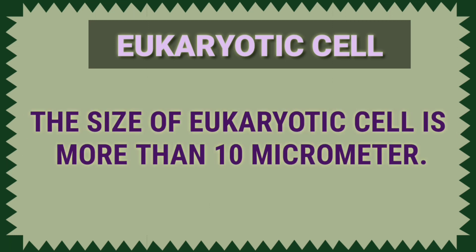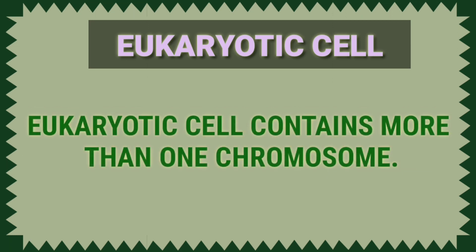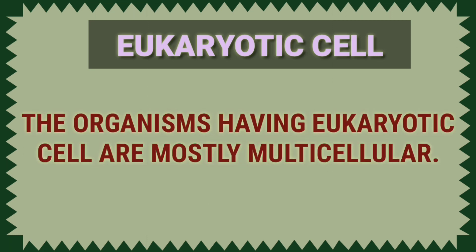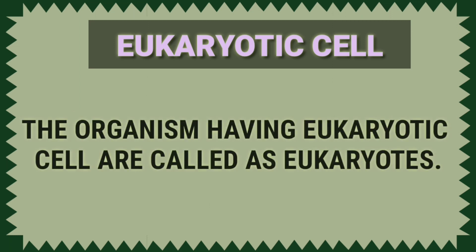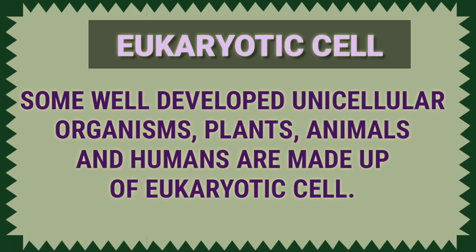The size of eukaryotic shell is more than 10 micrometer. Eukaryotic shell contains more than one chromosome. Organisms having eukaryotic shell are mostly multicellular. The organisms having eukaryotic shell are called as eukaryotes. Some well developed unicellular organisms, plants, animals and humans are made up of eukaryotic shell.